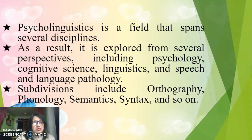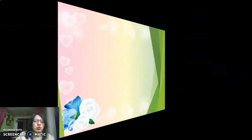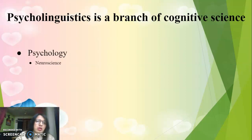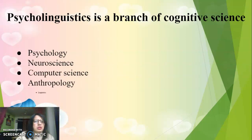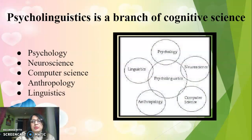Psycholinguistics spans several disciplines and is explored from several perspectives, including psychology, cognitive science, linguistics, and speech and language pathology. There are also subdivisions that include orthography, phonology, semantics, syntax, and speech. It is a branch of cognitive science that includes psychology, neuroscience, computer science, anthropology, and linguistics, as visible in the diagram showing how all these fields are interconnected.